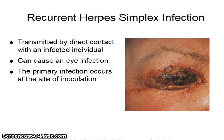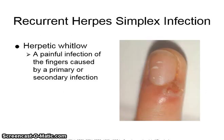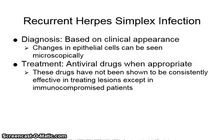Recurrent herpes simplex can be transmitted by direct contact with an infected individual and can cause eye infection. The primary infection occurs at the site of inoculation. Herpetic whitlow is a painful infection of the fingers caused by a primary or secondary infection of herpes simplex. Diagnosis is based on the clinical appearance; changes in epithelial cells can be seen microscopically. Treatment is with antiviral drugs when appropriate, though these drugs have not been shown to be consistently effective except in immunocompromised patients.